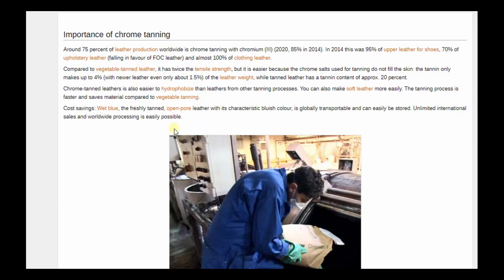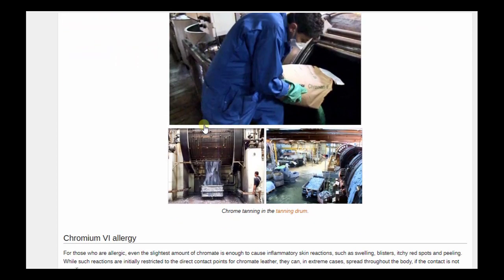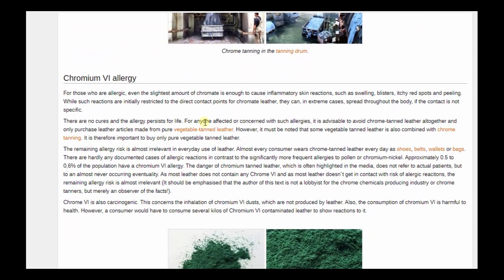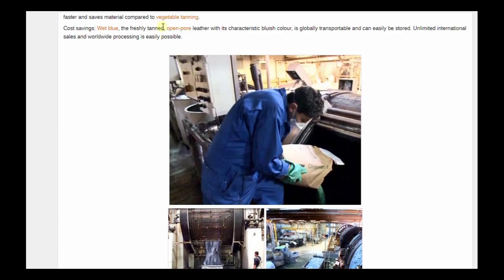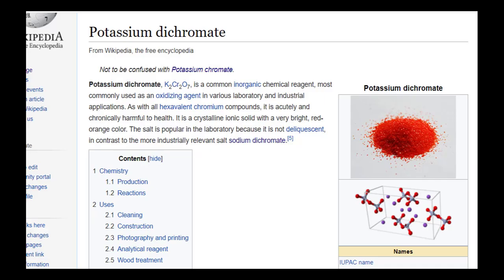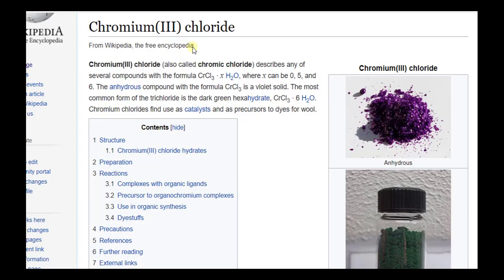They try and rinse off all the dichromate, and there's limits in terms of down to three parts per million to end up having chromate or chromium ions in leather. Here's the other version of it, chromium-3.